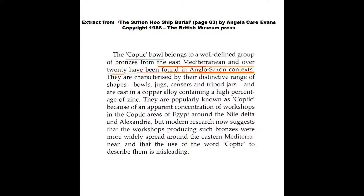Bowls of this type have been found on more than 20 sites associated with Anglo-Saxon occupation. This means that the Sutton Hoo burial isn't a one-off but one of very many sites that prove there was an extensive commerce between Dark Age England and the Merovingian Franks, whose maritime middlemen were the Frisians.